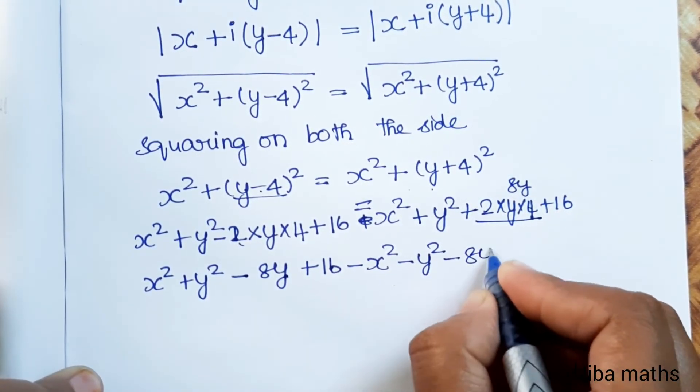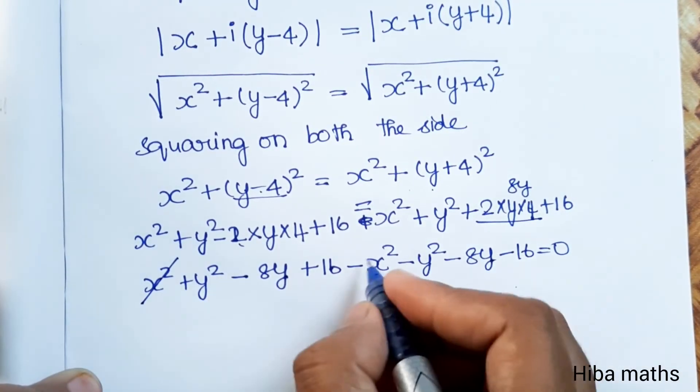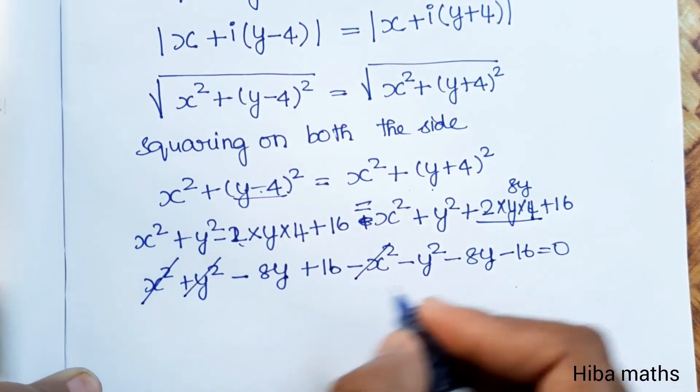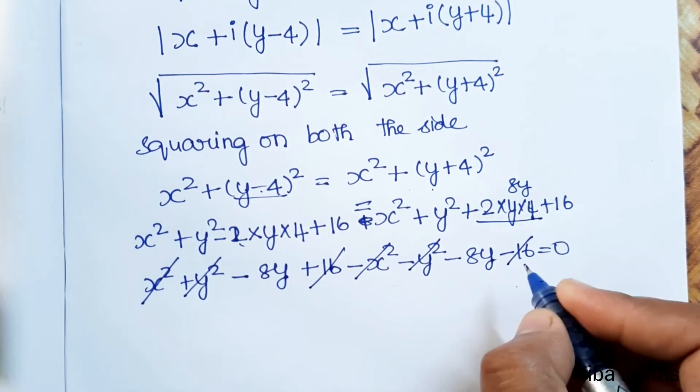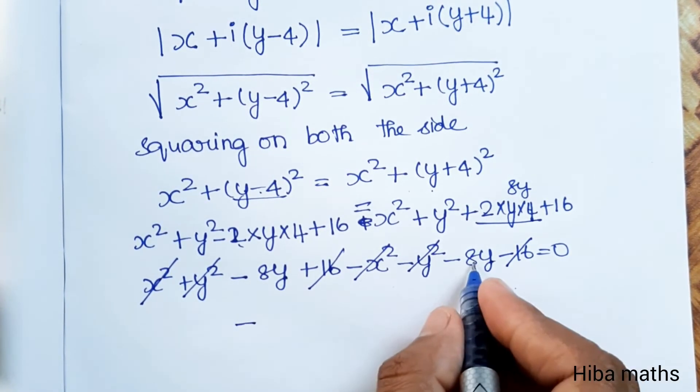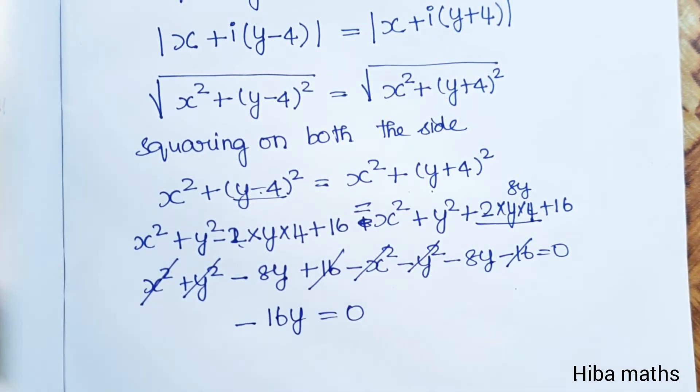x squared minus x squared. y squared minus y squared. minus 16 minus 16. Balance is minus 8y minus 8y. Now minus 16y equals 0.